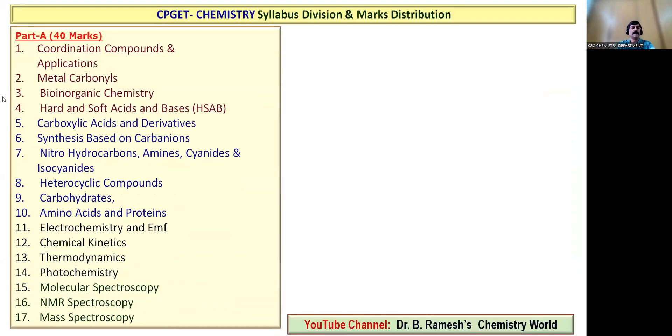And in part A you have coordination compounds, metal carbonyls, bio-inorganic chemistry, hard and soft acid bases as part of inorganic chemistry. And you have organic chemistry topics, carboxylic acids and derivatives, synthesis based on carbon ions, nitro hydrocarbons, heterocyclic compounds, carbohydrates.